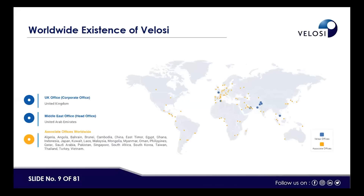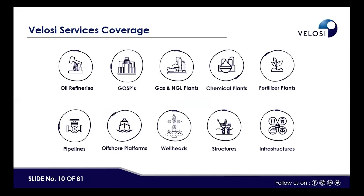Here is a map showing our worldwide presence. By combining global coverage and local knowledge with our wide range of services, we create tailored solutions to complex problems. Our interrelated services and integrated approach ensure we can accommodate a wide range of projects. We provide services covering a broad range of industries including oil refineries, GOSPs, gas and energy plants, chemical plants, fertilizer plants, pipelines, offshore platforms, well heads, and infrastructure structures.